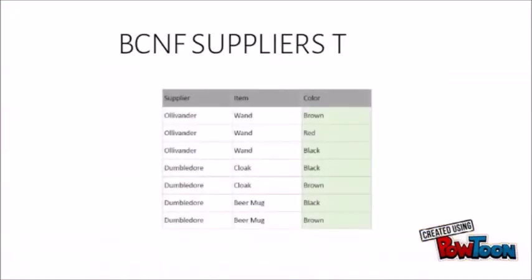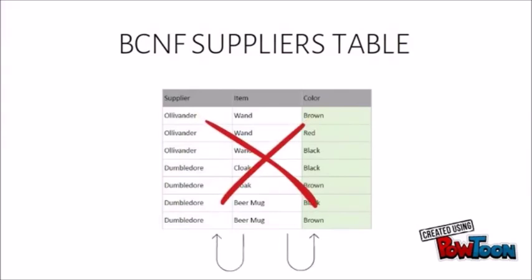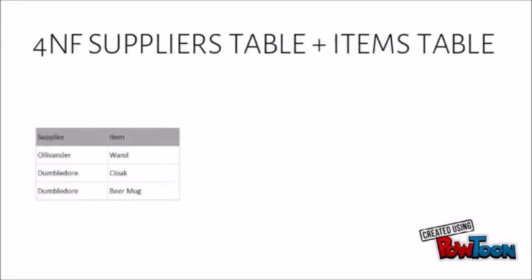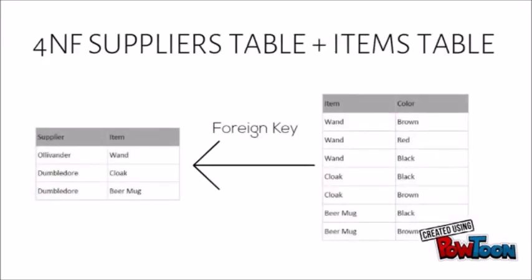Let's take a look back at our suppliers table earlier. There's now a new column called the color. For each item, there's a supplier for it, and there's a color for the set item. However, supplier and color is independent from each other. We split the table into two, the suppliers table and the items table. The suppliers table has a supplier name and the item it carries. The items table contains the items and the color of that item. This is now in the fourth normal form.